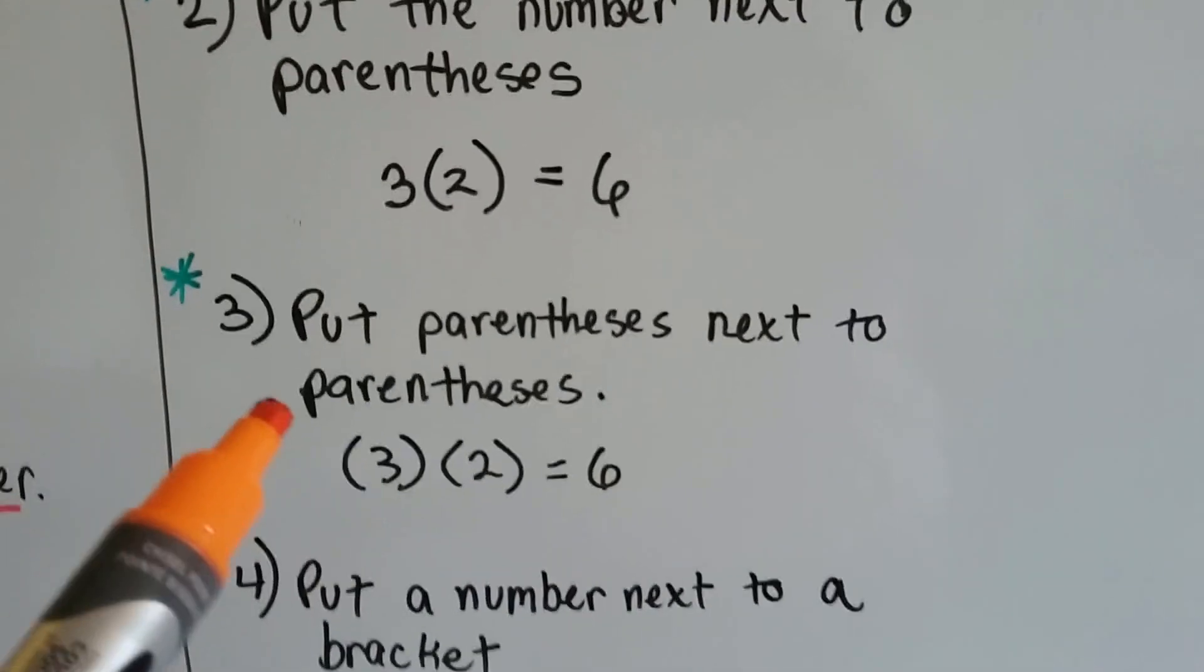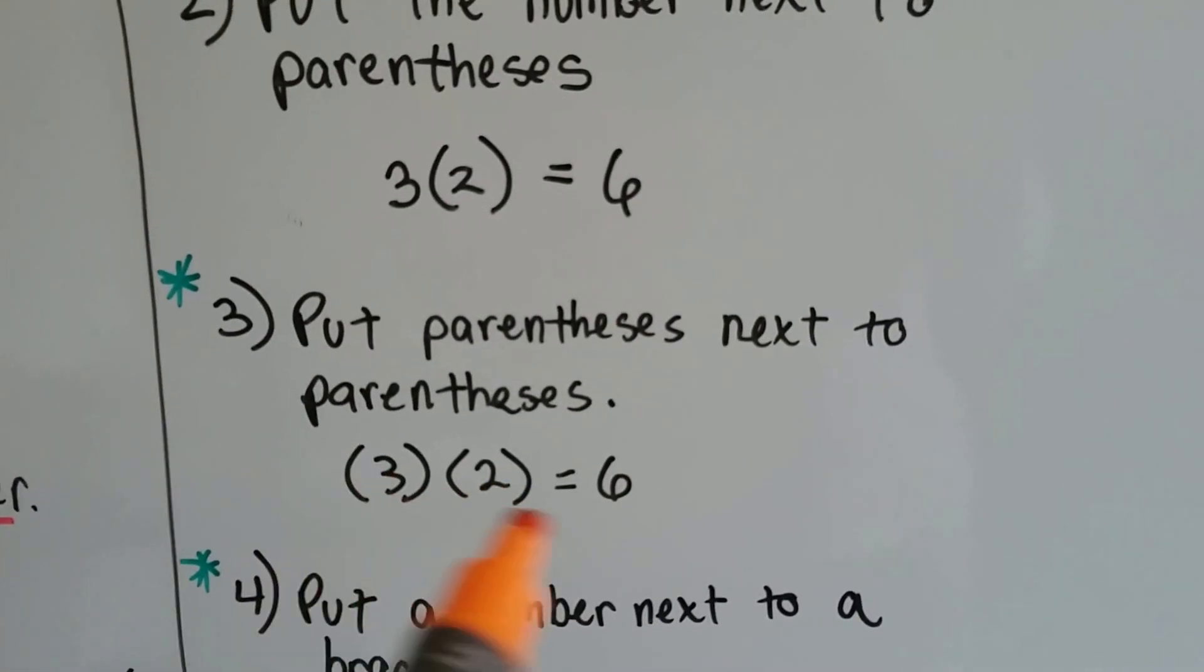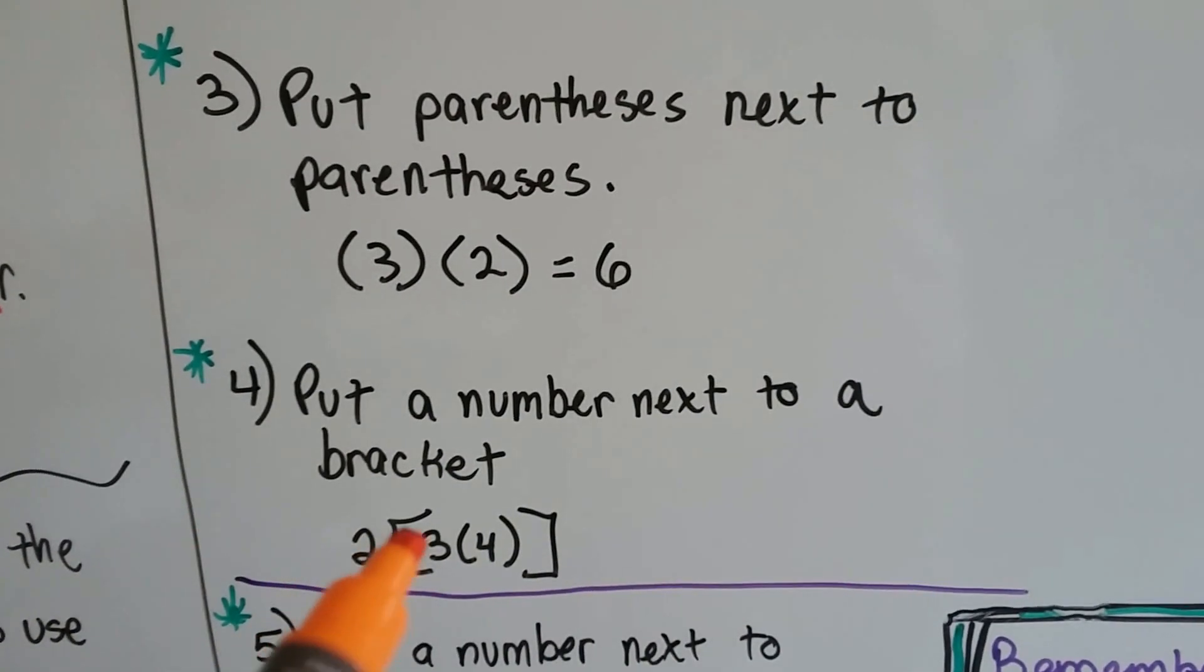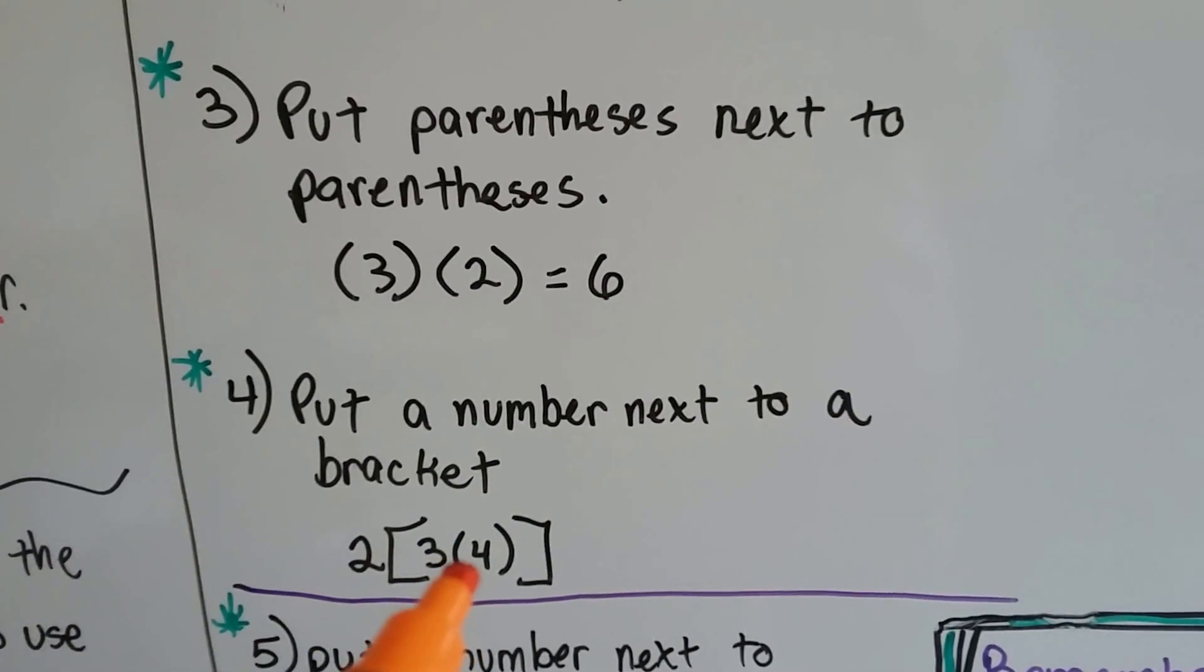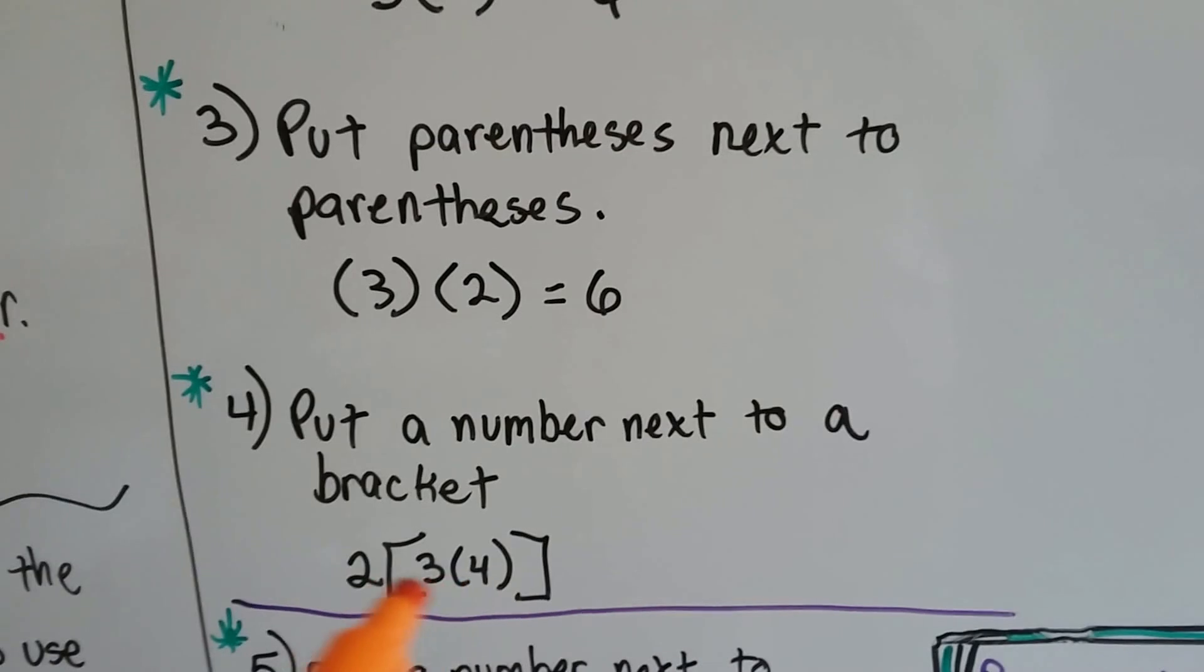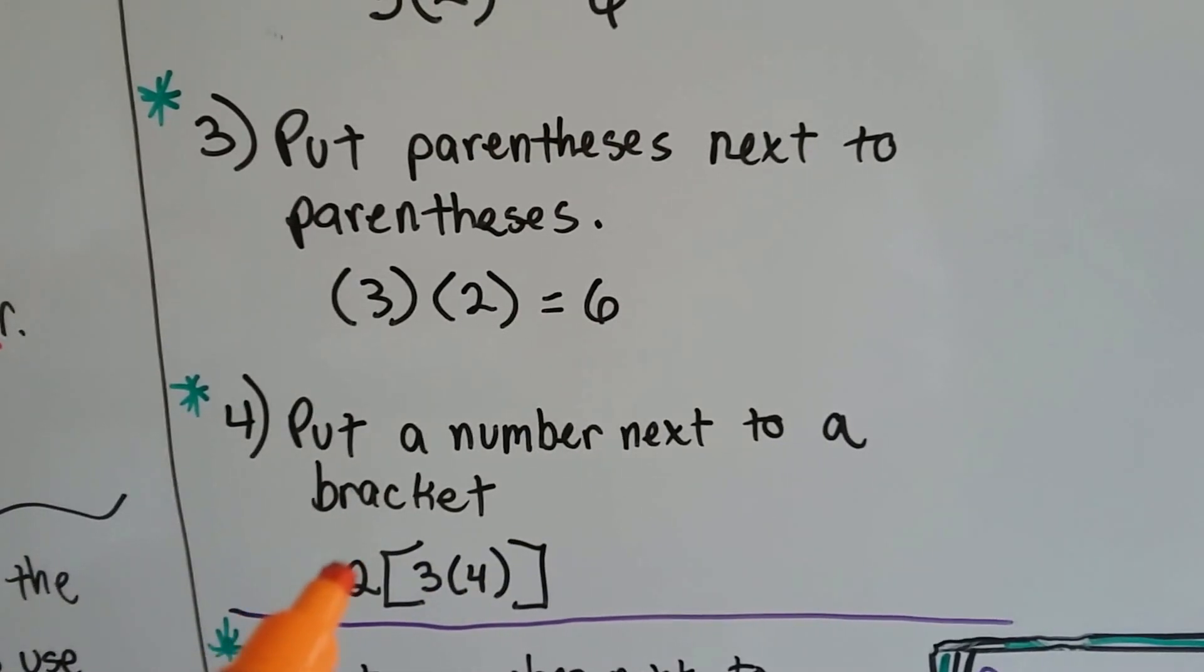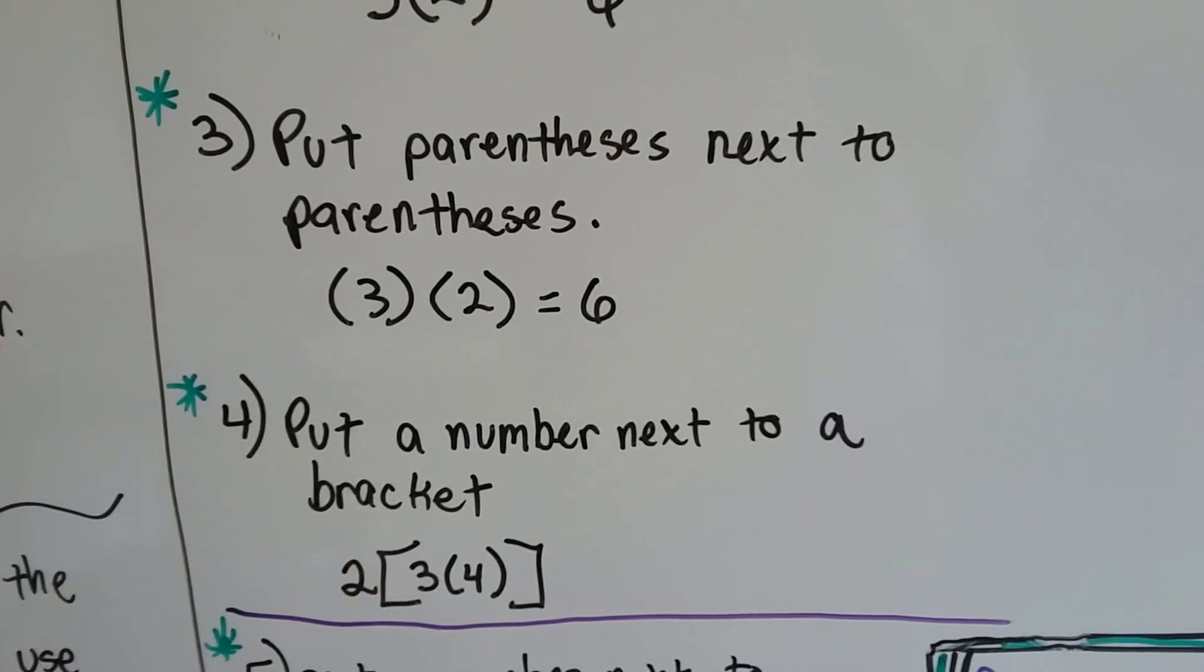You can also see parentheses next to parentheses. That means to multiply. Or, you could see the number next to a bracket. And you have to do what's in the parentheses first, what's in the bracket first, and then you would do that one on the outside, because of order of operations, but it still means to multiply when it's next to a bracket.